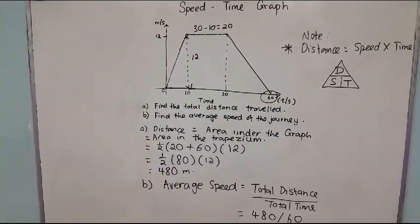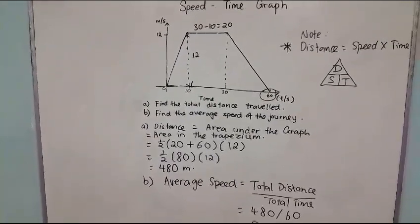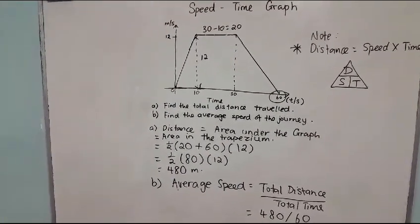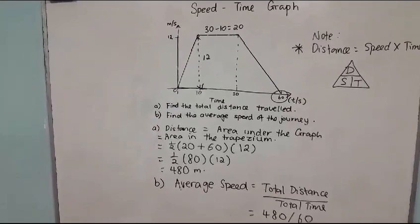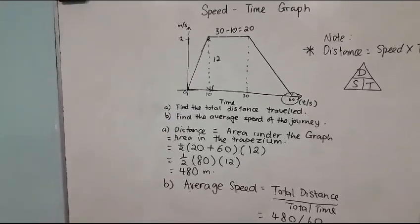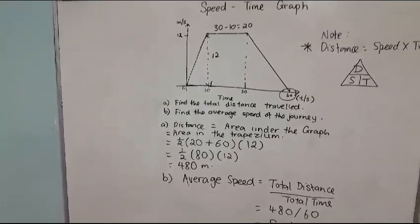Taking the area of the trapezium, the formula is half. Both sides, 20 plus 60, gives you 80. The difference in the height is 12. So half times 80 times 12 is 480 meters. The distance is 480 meters.